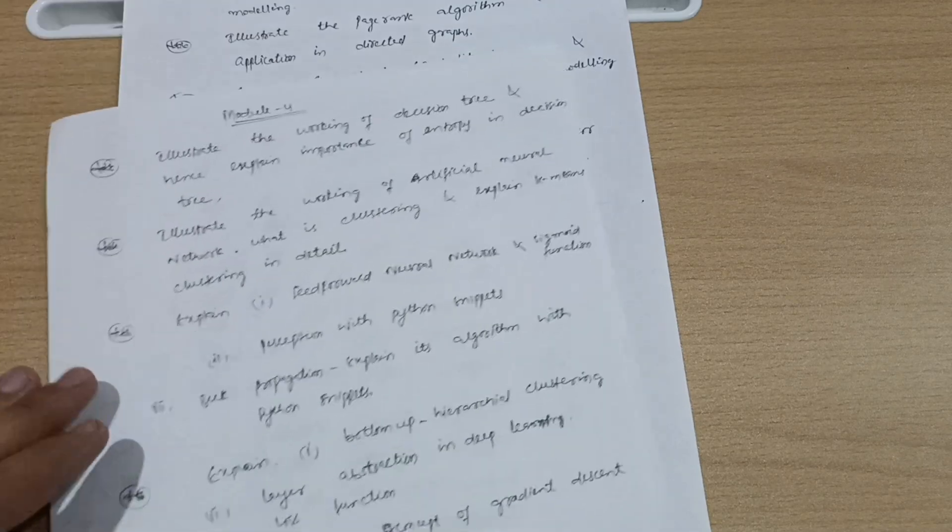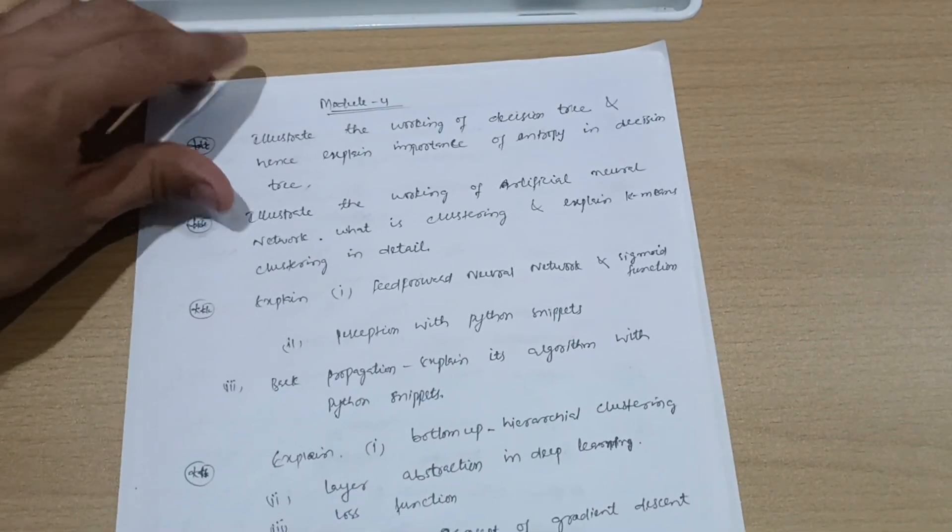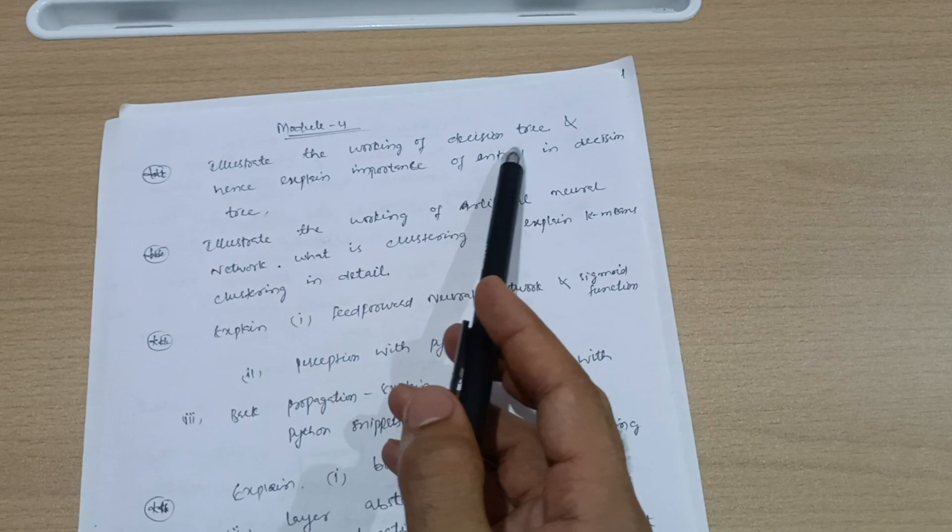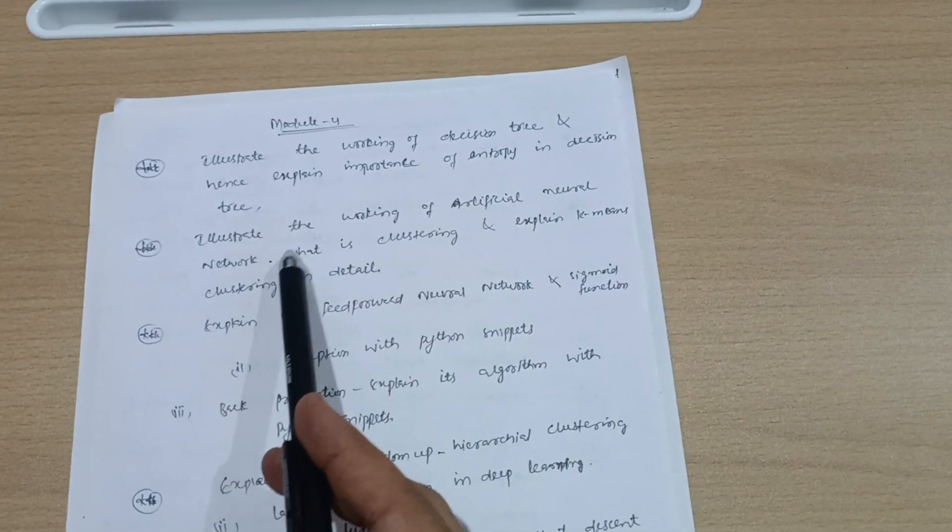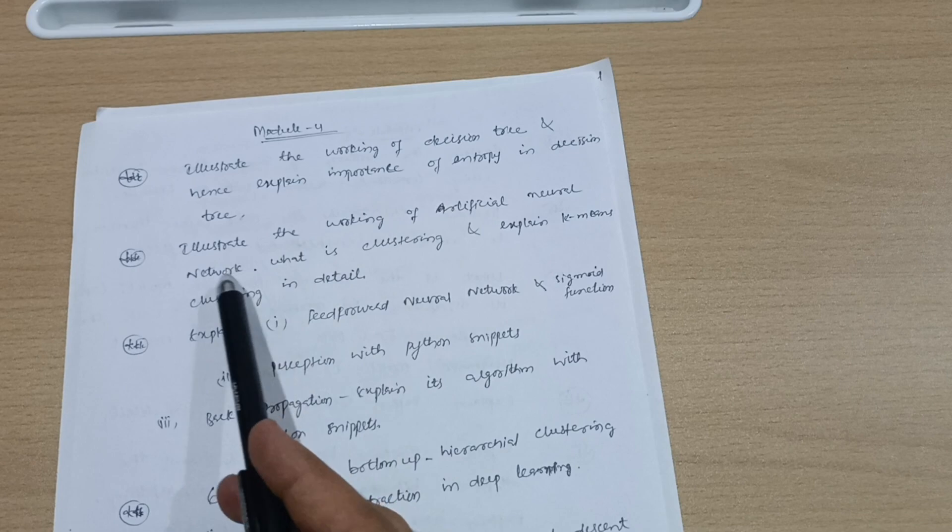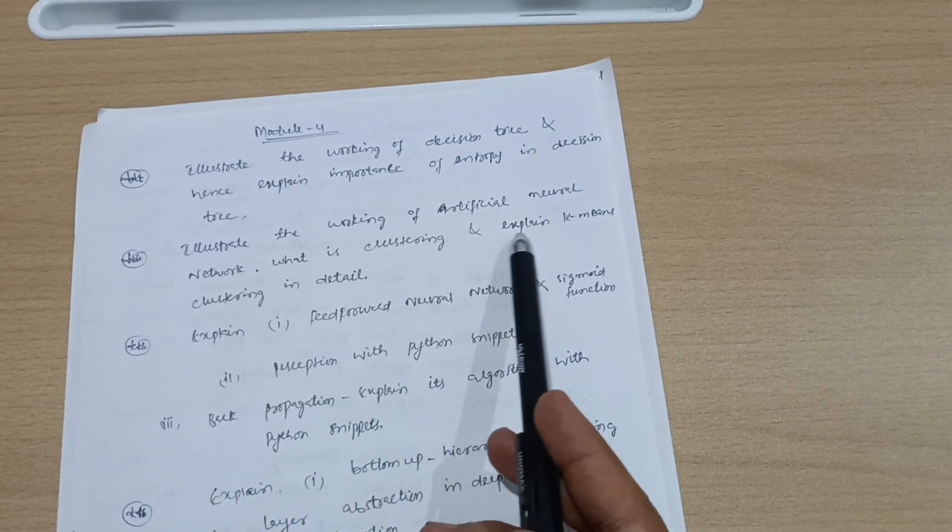Now let's move to module 4, in which you have to cover some super important questions like: illustrate the working of decision tree and hence expand importance of entropy in decision tree. Illustrate the working of artificial neural network. What is clustering and explain k-means clustering in detail.